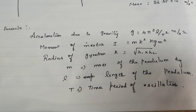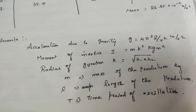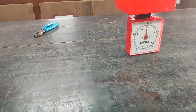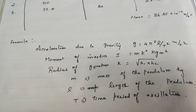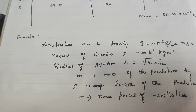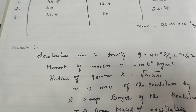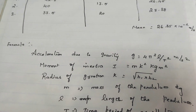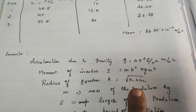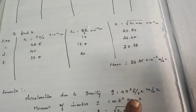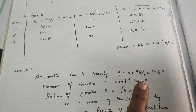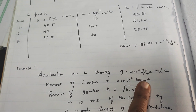Here, m is nothing but the mass of the pendulum. By using a weighing machine, you can measure the mass of the pendulum. The radius of gyration is k, measured by the formula: root of h1 into h2. Here, h1 and h2 are taken from the graph. For the l value also, we have to take it from the graph.